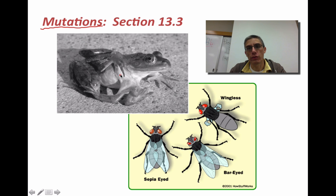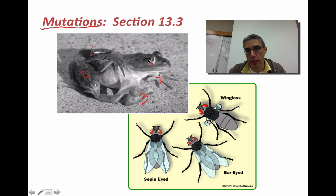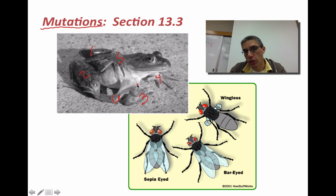If you look down here, we have two examples of mutations. In this case, we have a frog that instead of having one, two, three, four legs, it actually has five or six legs. That could be a result of a mutation of some sort during development.